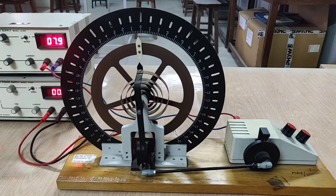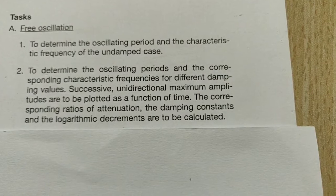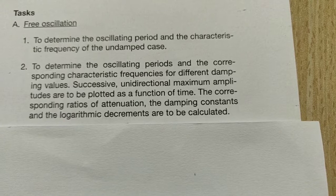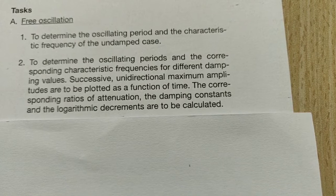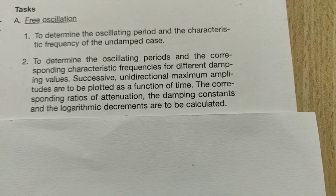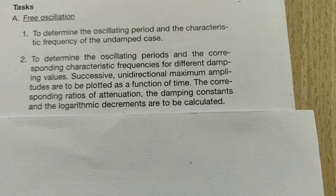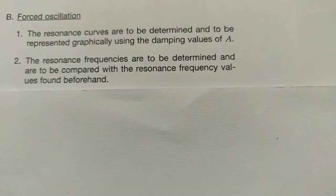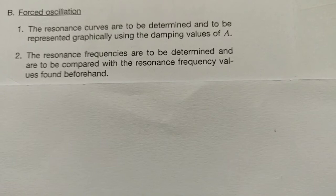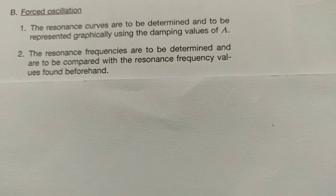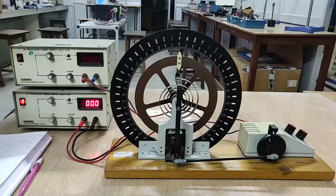Forced oscillations can also be made undamped as well as damped. The aim of our experiment consists of the study of free as well as forced oscillations. For free oscillations, we have to determine the oscillating period and the characteristic frequency of the undamped case, and the oscillating periods and corresponding characteristic frequencies for different damping values. Successive unidirectional maximum amplitudes are to be plotted as a function of time, and the corresponding ratios of attenuation, damping constants, and logarithmic decrements are to be calculated. For forced oscillations, the resonance curves are to be determined and represented graphically, and the resonance frequencies are to be compared with the values found beforehand.